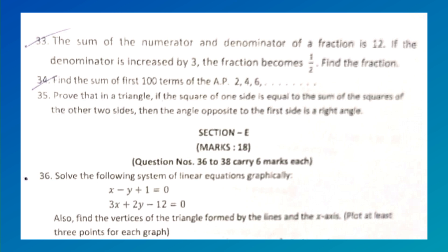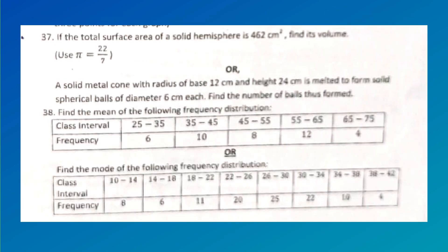The total surface area of a solid hemisphere is 462 cm². Find its volume (use π = 22/7). Or: A solid metal cone with radius of base 12 cm and height 24 cm is melted to form spherical balls of diameter 6 cm each. Find the number of balls thus formed.